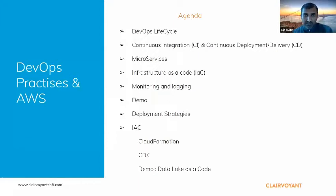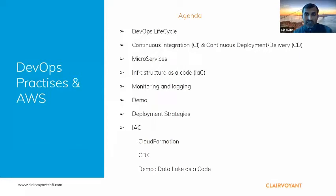For the next 40–45 minutes, we'll start with the DevOps lifecycle — how it differs from typical software development lifecycle and why it's more productive and efficient. Then we'll focus on four very critical practices: continuous integration and continuous deployment or delivery. Everybody who starts their DevOps journey synonymizes DevOps with CI/CD, but there are other aspects of the lifecycle as well.